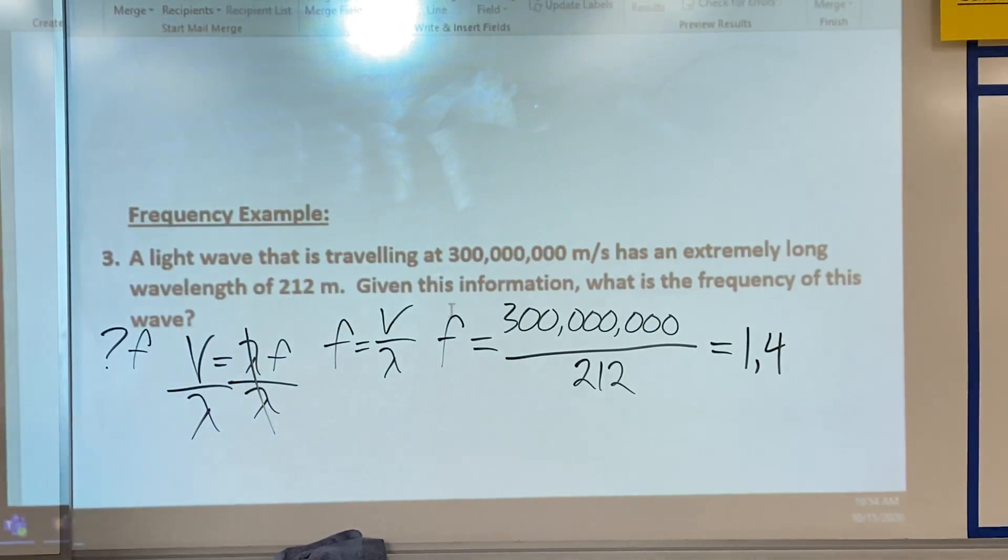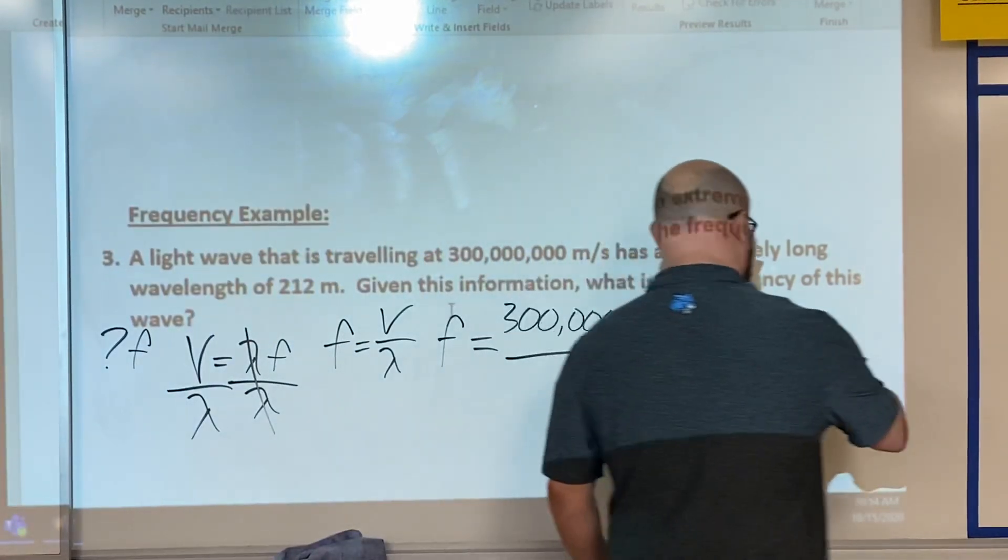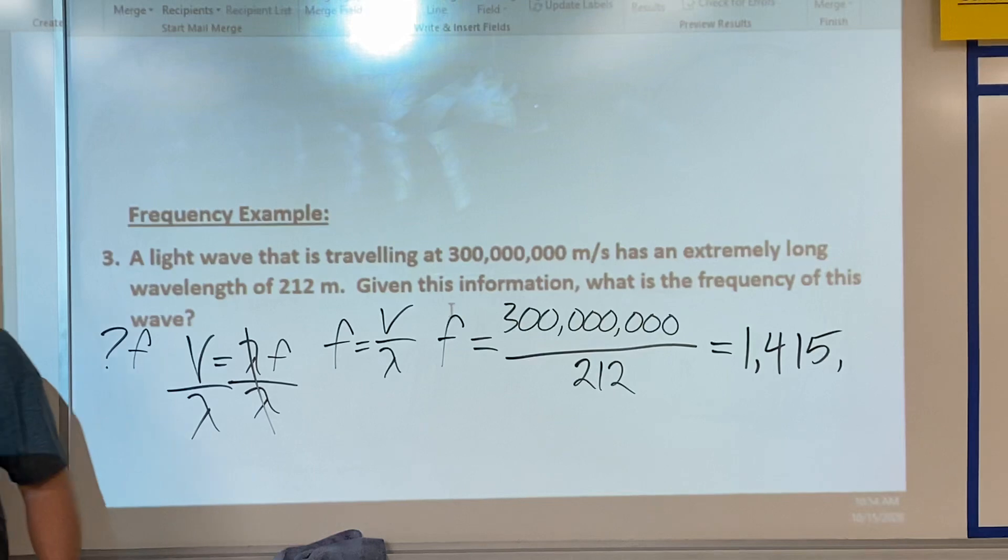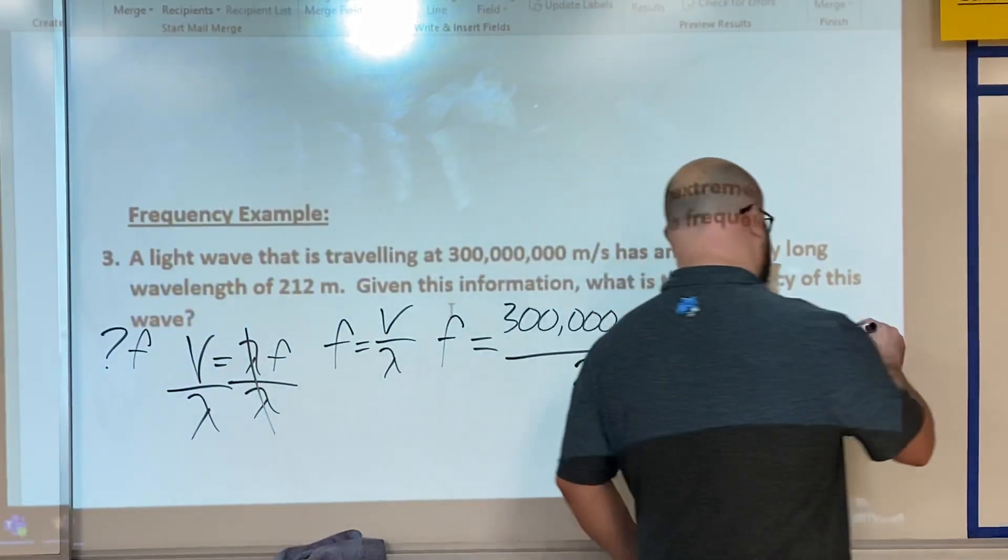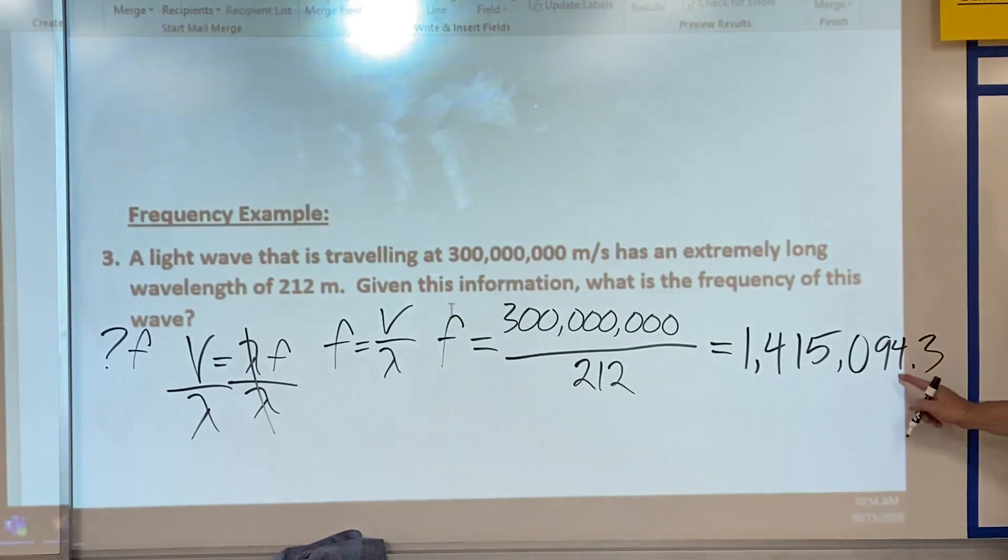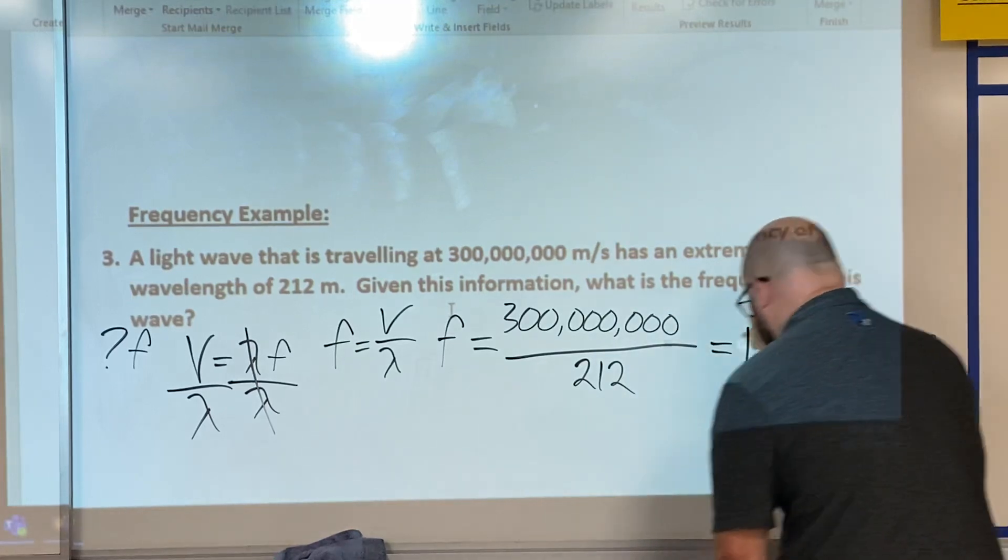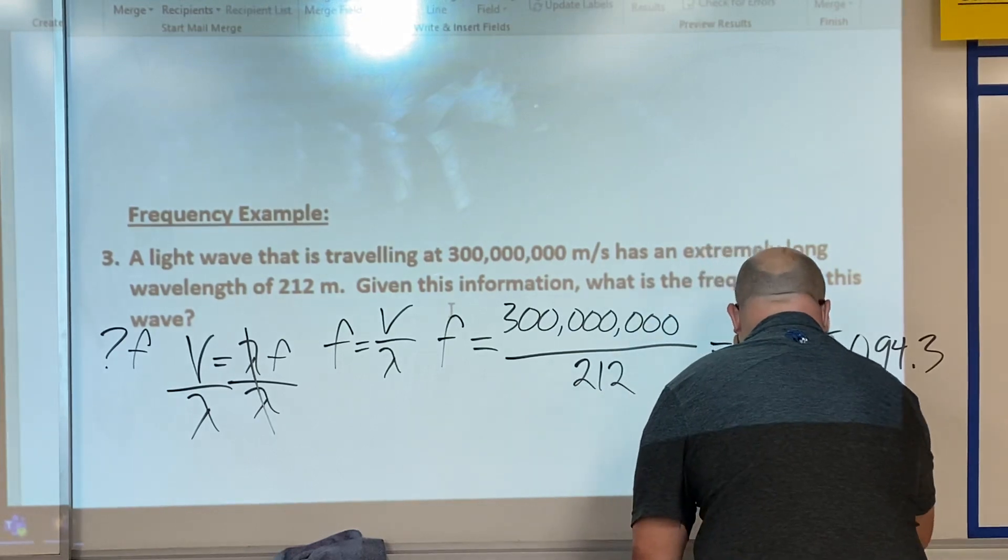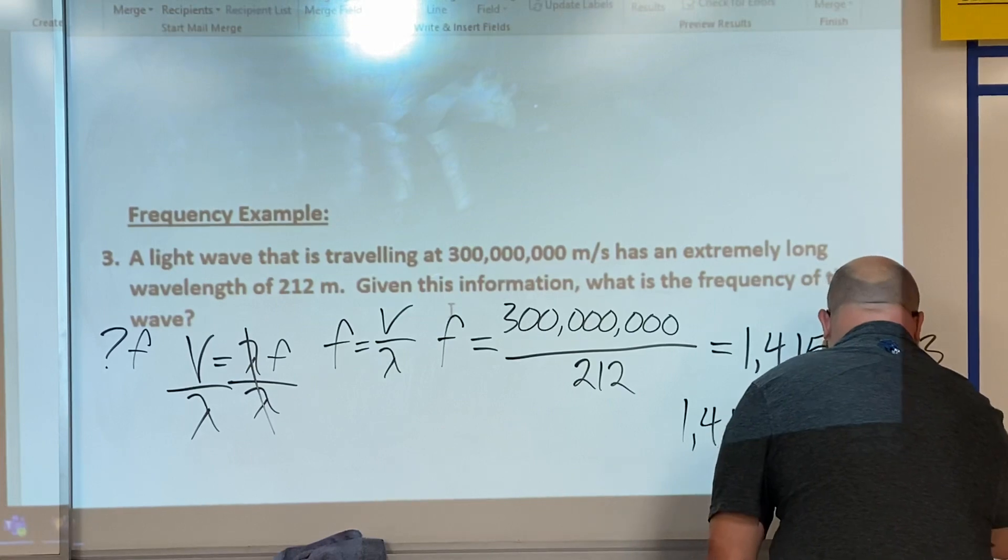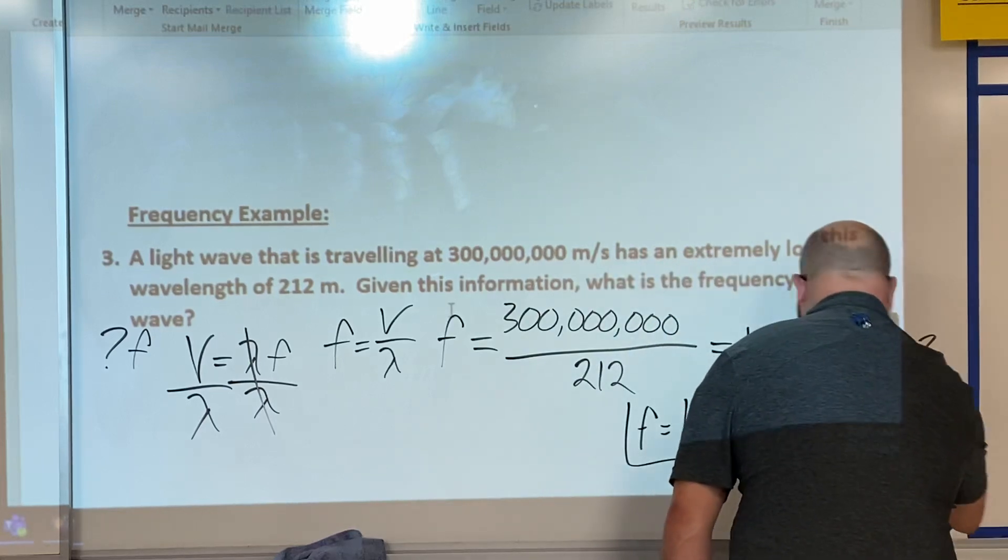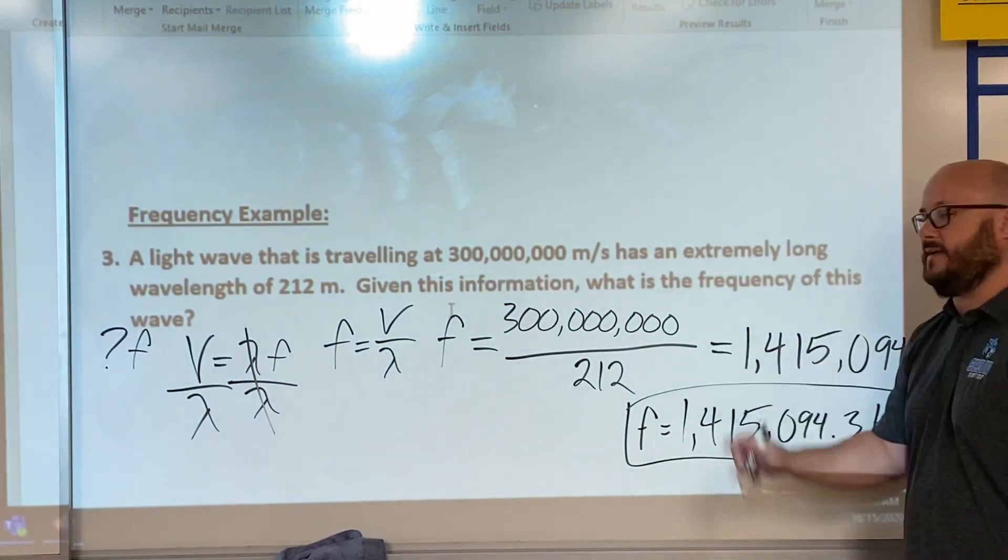All right, we've got 1,415,094.3. So 1,415,094.3, and frequency we're going to be measuring that in Hertz. That's a lot of cycles per second, but again light is very fast.